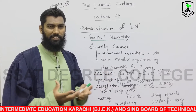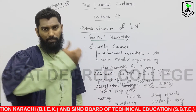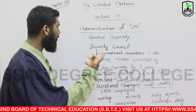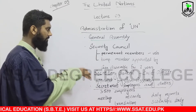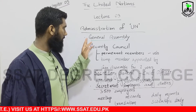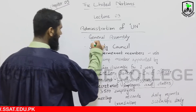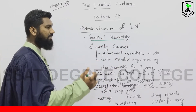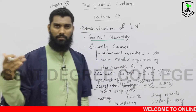UN ki administrative machinery — the people who are working behind the administration, the ones because of whom the UN is functioning, who they are and how many departments exist. First of all, we will talk about the General Assembly. General Assembly is the place where member nations represent themselves by their representatives.